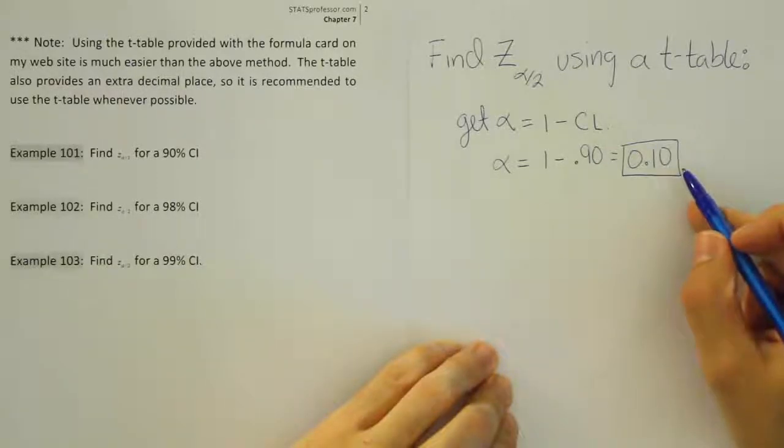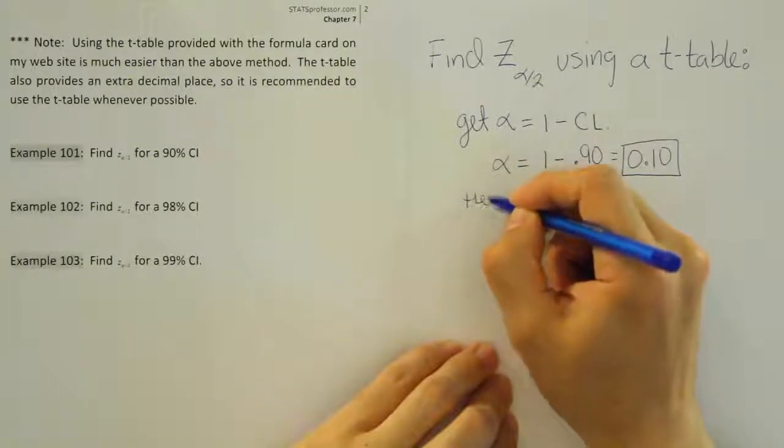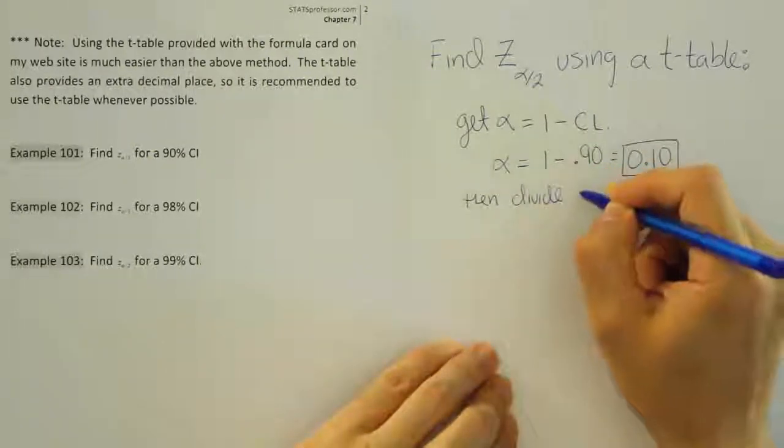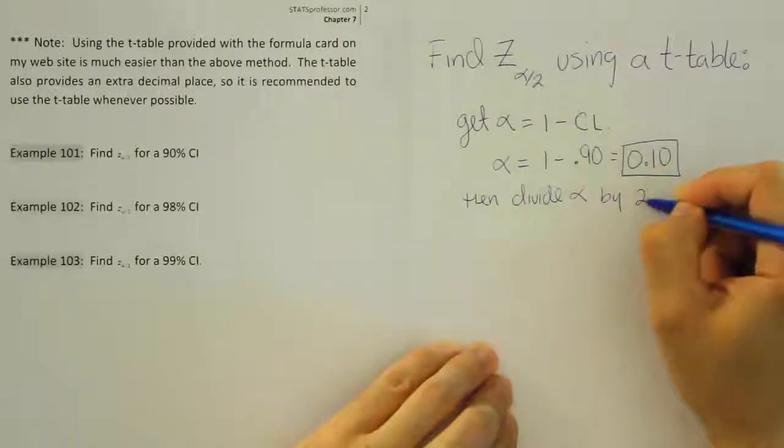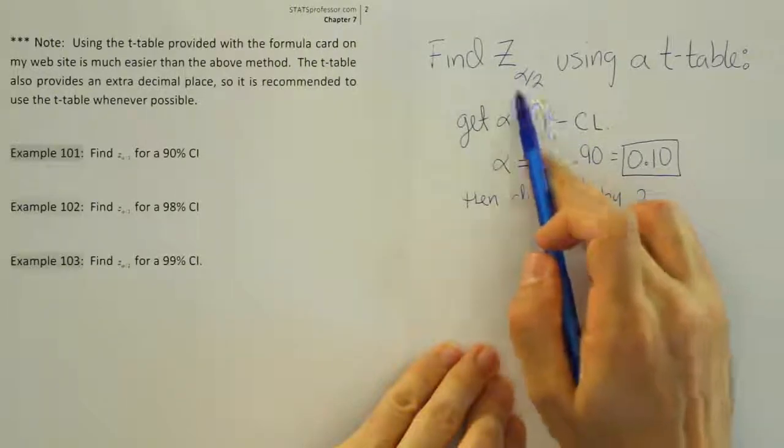So then divide alpha by 2. We're just going to take that alpha and chop it in half. Because remember, we're looking for a z alpha divided by 2 value. So that should be easier to remember that you have to divide your alpha by 2 to finish this problem.